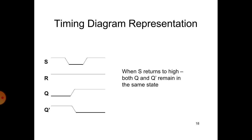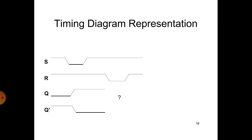When S returns to high, both Q and Q̄ remain in the same state. S will be in high state and R will be in high state, and Q and Q̄ will remain in the same state. Q and Q̄ will have a small delay. R will be in the next state, and Q and Q̄ will be in small delay. In this timing diagram representation, Q and Q̄ flip between states — it is the flip state.